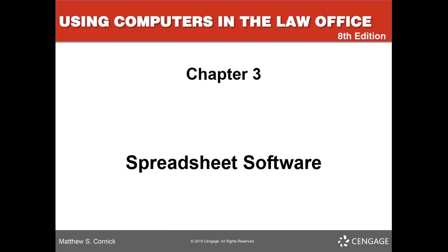Welcome to the Chapter 3 spreadsheet software lecture, which begins on page 106 in your text. We're going to talk about the chapter objectives: you're going to understand what a spreadsheet is, describe how rows and columns make up the structure of a spreadsheet, explain what text, values, and formulas are, and describe the types of charts commonly found in spreadsheet programs.